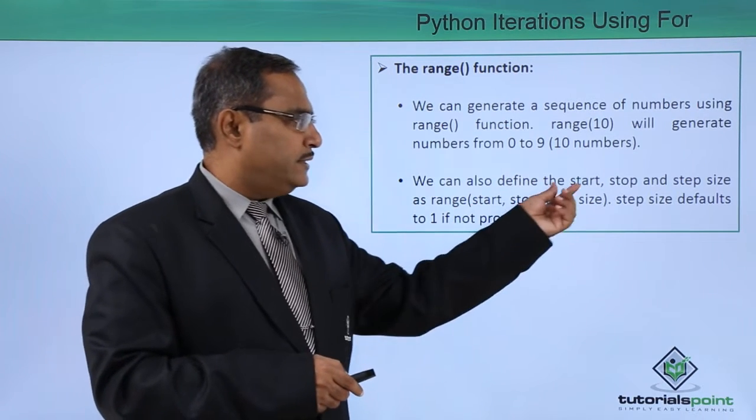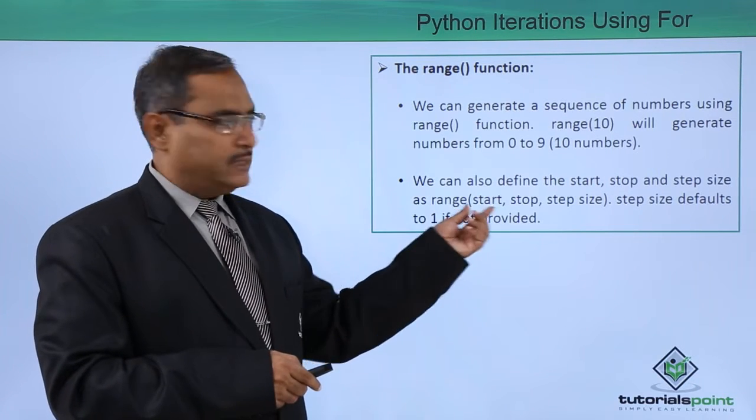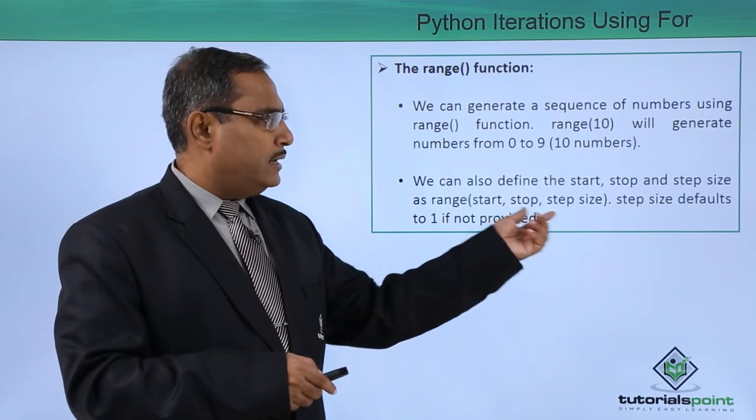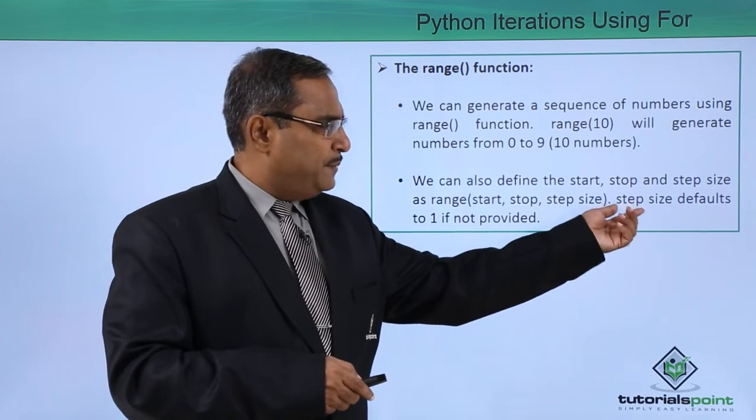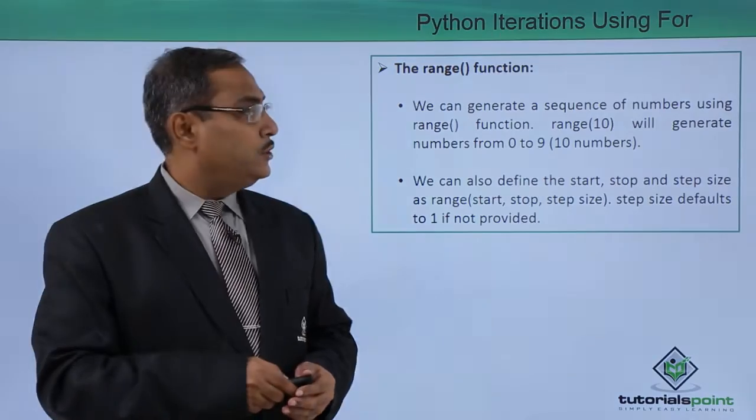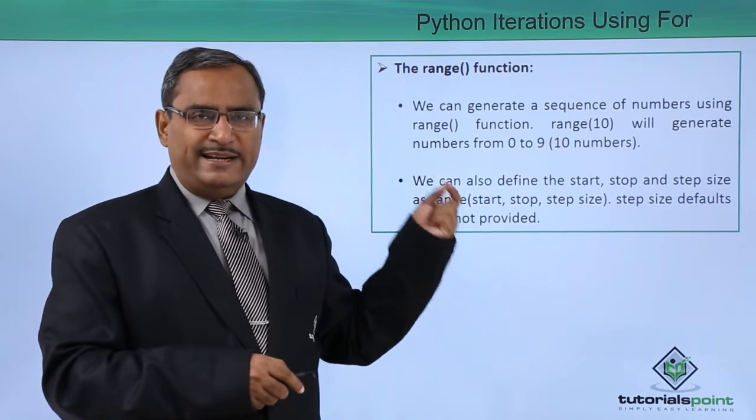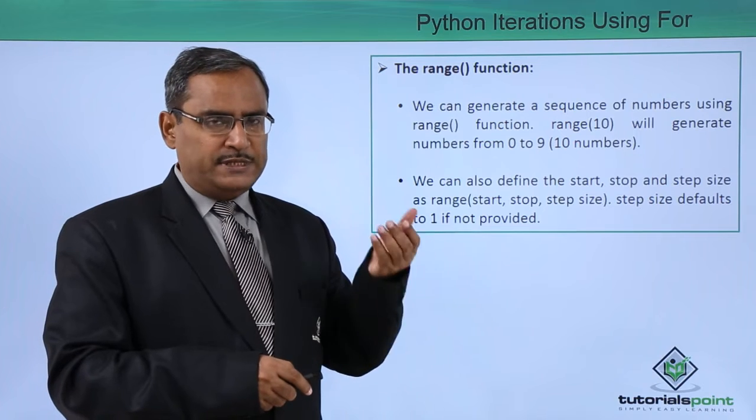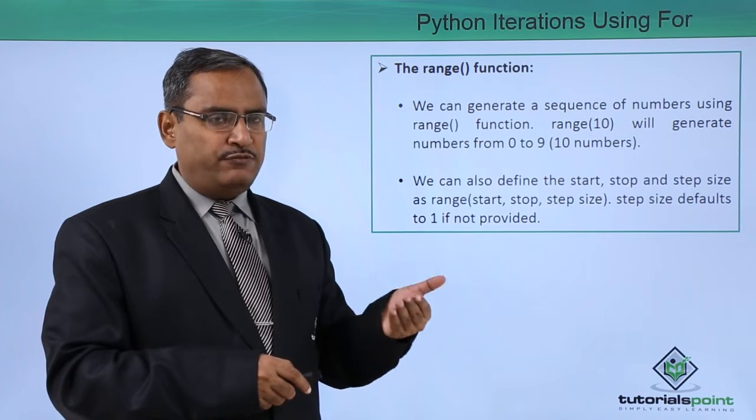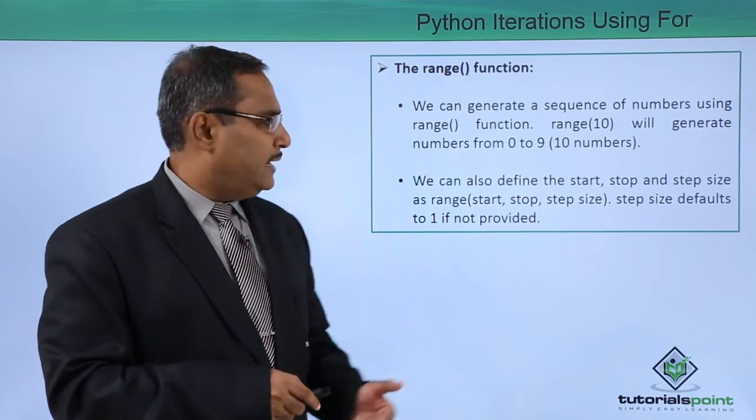We can also define the start, stop and step size as range - there is start comma stop comma step size. Step size default is 1 if it is not provided. Let us suppose if we write this one as range 1 comma 10 comma 1 that means it will have the values ranging from 1 to 9 and with the increment of 1 in that case.